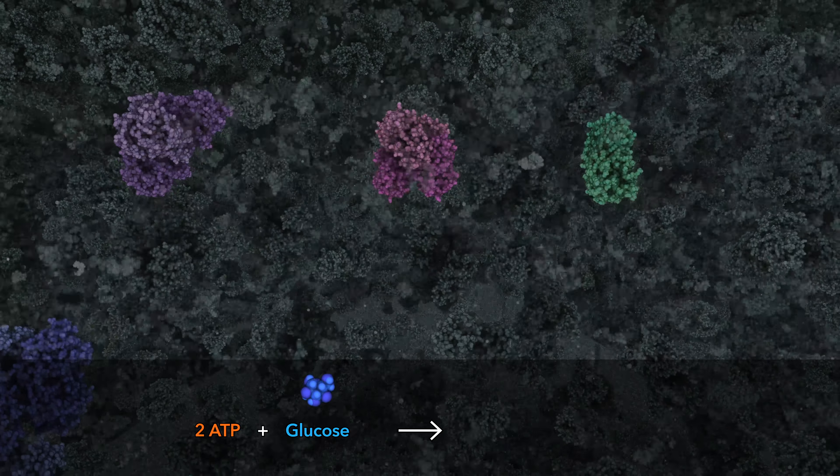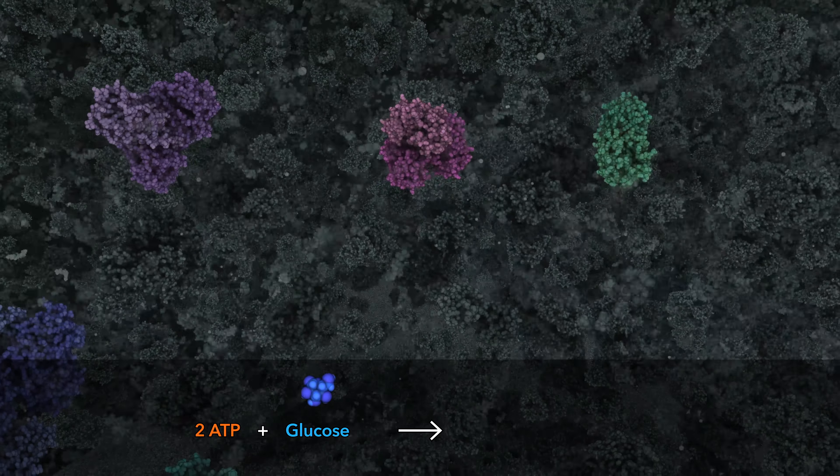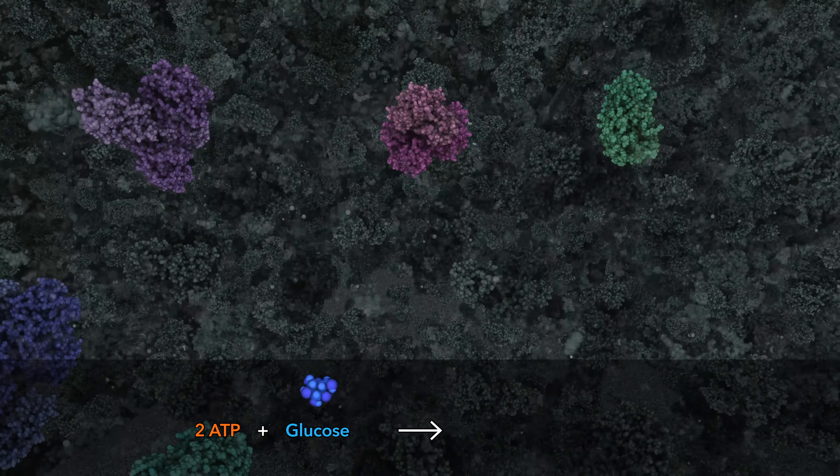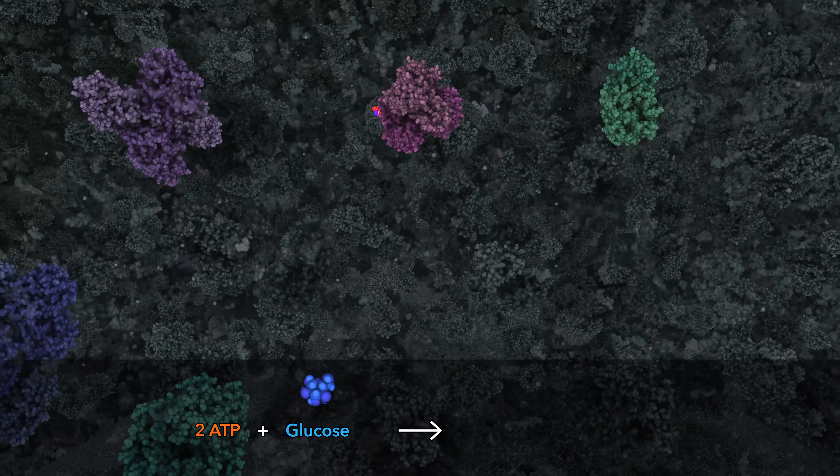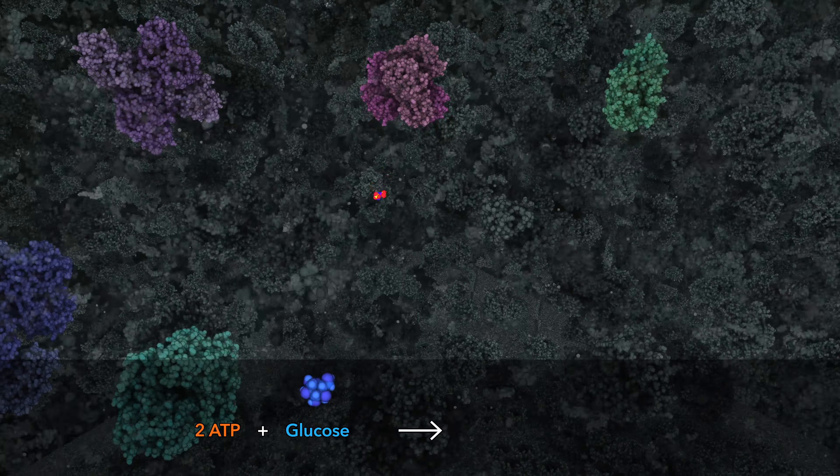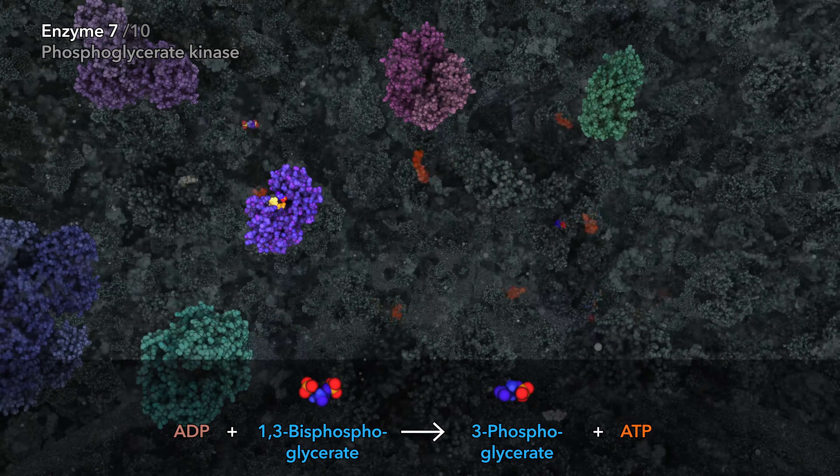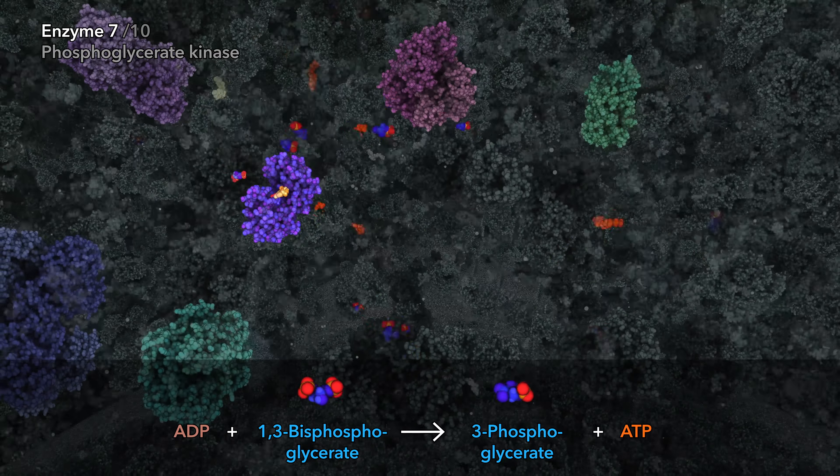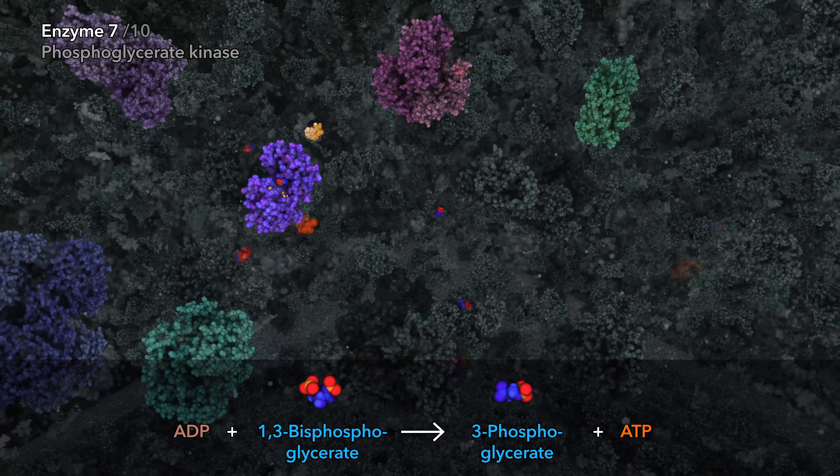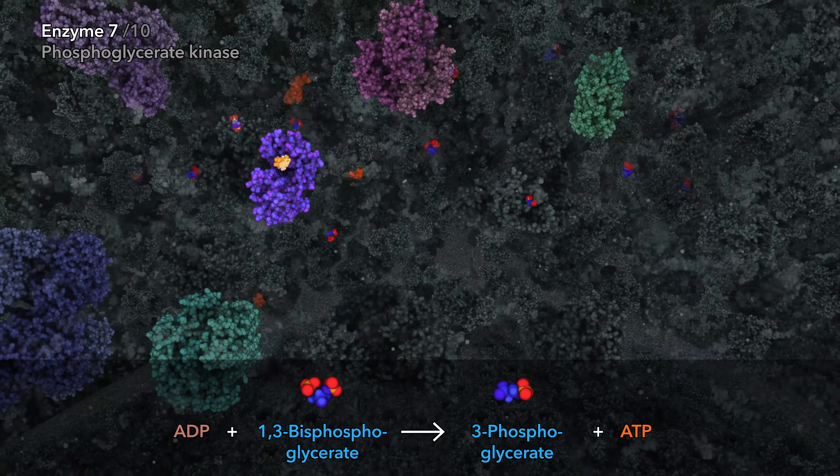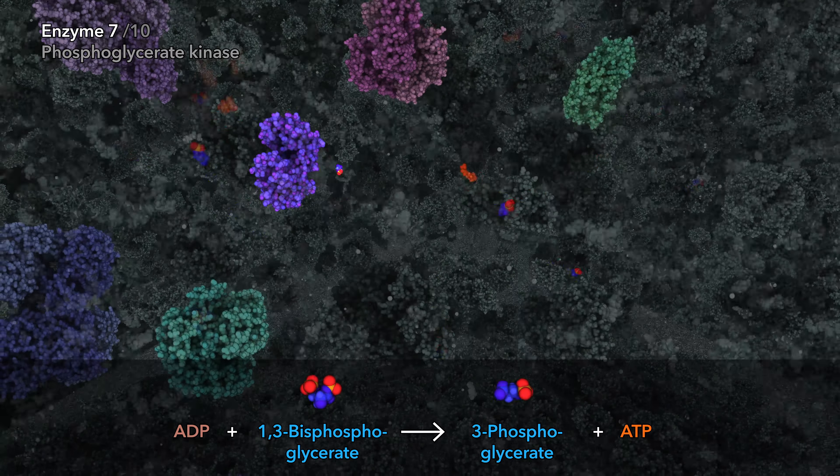Halfway through glycolysis, the cell has consumed two ATP molecules, breaking down glucose, and is now ready to capture energy in return. The seventh enzyme transfers a phosphate group to ADP, creating chemical fuel, ATP.